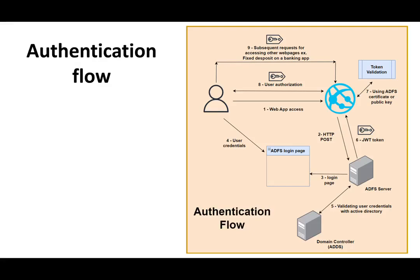This JWT token is passed back to the web application in step six — this is called token issuance, in response to the authentication request from the web app. In step seven, upon receiving the token, the web application validates its signature and other claims to ensure its authenticity and integrity.